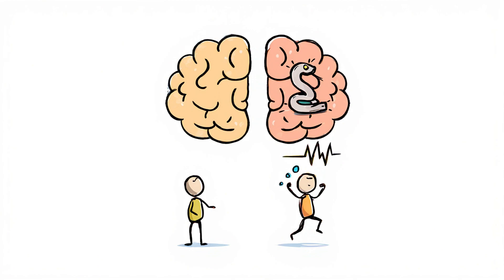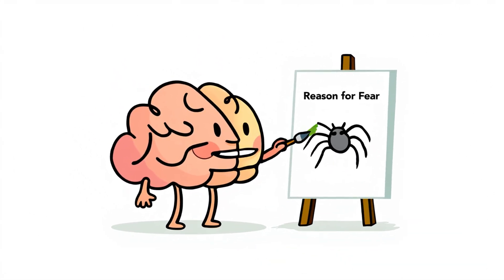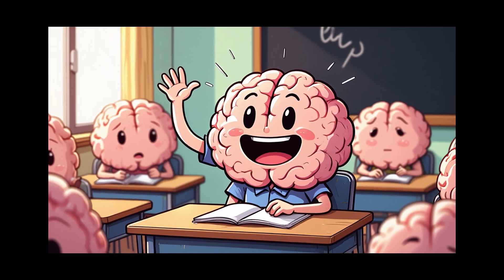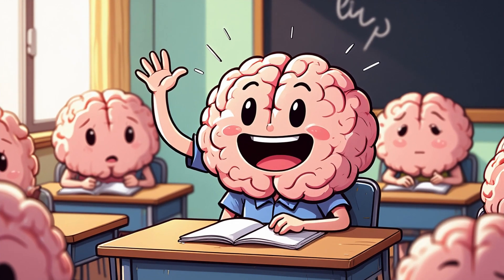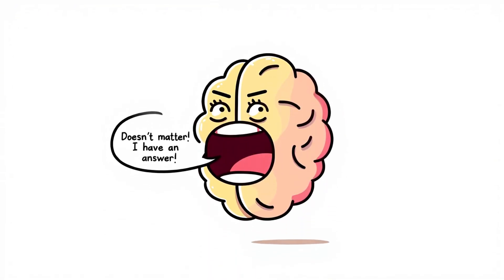But when asked, why are you scared? The left hemisphere, which controls language but didn't see the image, would confidently invent an explanation like, oh, I thought I saw a spider on the wall. There was no spider. But the left brain hates a blank space. So it just made something up that sounded reasonable. The left brain is basically that overconfident student who always raises their hand, even if they didn't do the homework. What's the question? Doesn't matter. I have an answer.